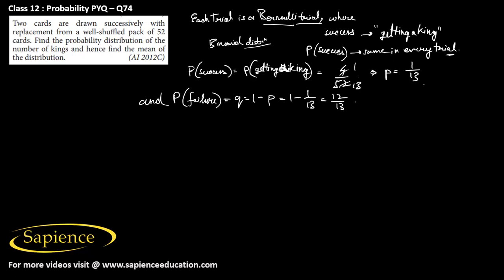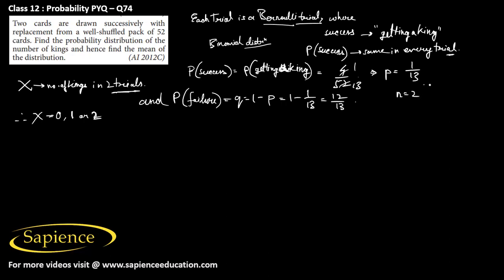Now, find the probability distribution of the number of kings. The random variable X is the number of kings in two trials. Since two cards are being drawn, the values of X can be 0, 1, or 2 — no kings, one king, or two kings. The total number of Bernoulli trials n equals 2.